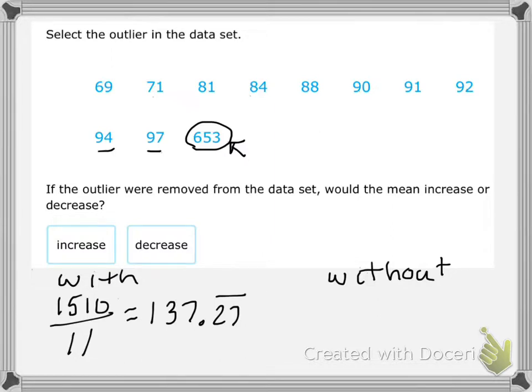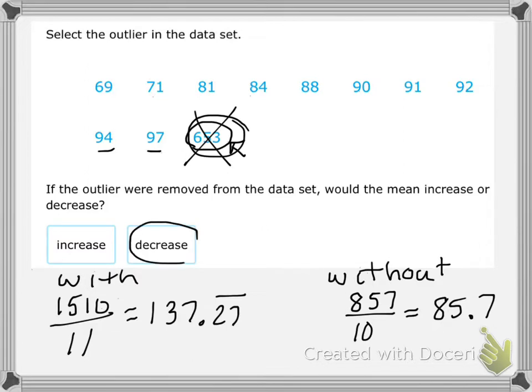Now we're going to calculate it without. So I'm going to take the sum of 1510, 1510. And I'm going to subtract that 653 from it. So that gives us a total sum of 857 for the rest of the numbers. And now we're going to divide by, instead of 11 numbers, we've taken out the outlier. Now we're dividing by 10 numbers. So that gives us a mean of 85 and 7 tenths. So you'll notice when we take out the higher number because it increases the sum so much, it actually decreases our mean.